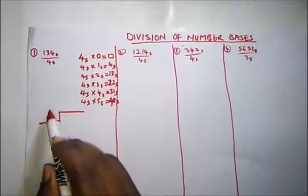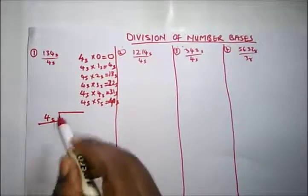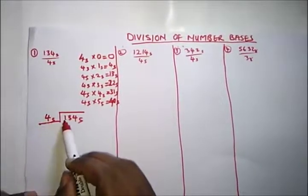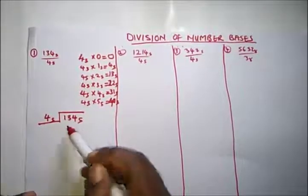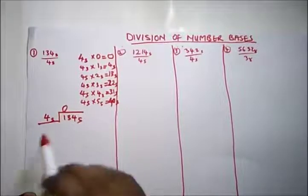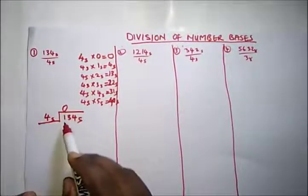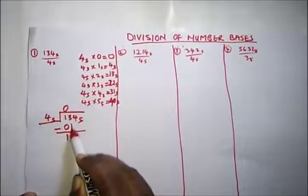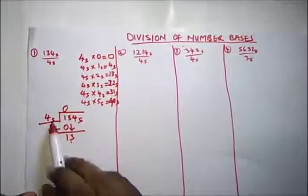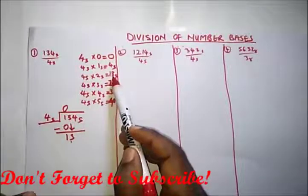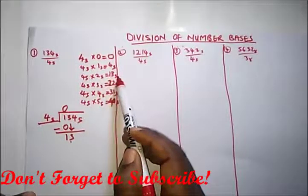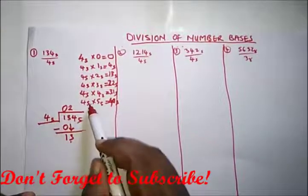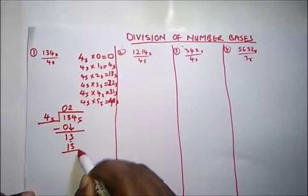Let's draw our long division: 134 base 5 divided by 4 base 5. 4 into 1 won't go, so we put a 0. 0 times 4 is 0, subtract, and bring down 3. Now we have 13 base 5. From our table, 4 times 2 gives us 13 base 5, so 4 into 13 base 5 goes 2 times. Write 2 down. 2 times 4 in base 5 is 13 base 5, so subtract to get 0.